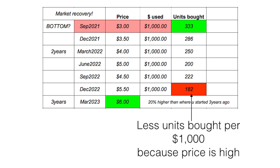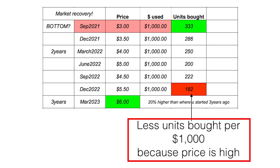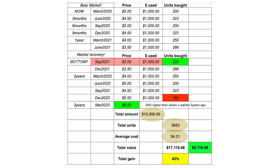As the market climbs up, your one thousand dollars starts to buy fewer and fewer units. Imagine if you recover fully after three years — prices recover back to six dollars — and in that last quarter you're only buying 182 units because prices are higher. You're buying fewer units per one thousand dollars. That's the real effect of dollar cost averaging.